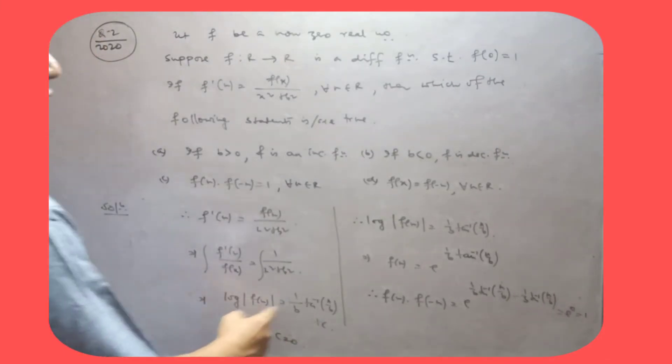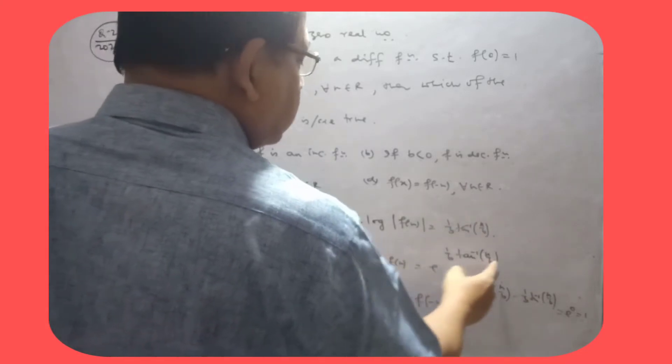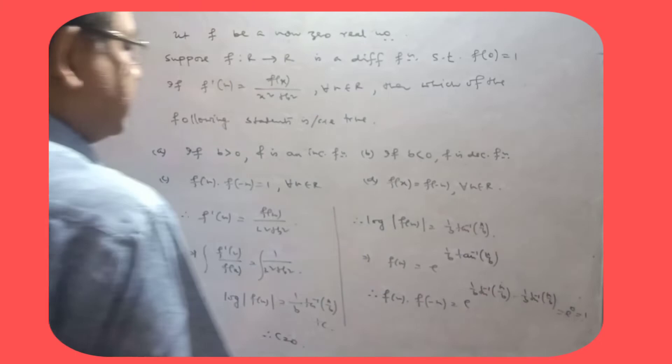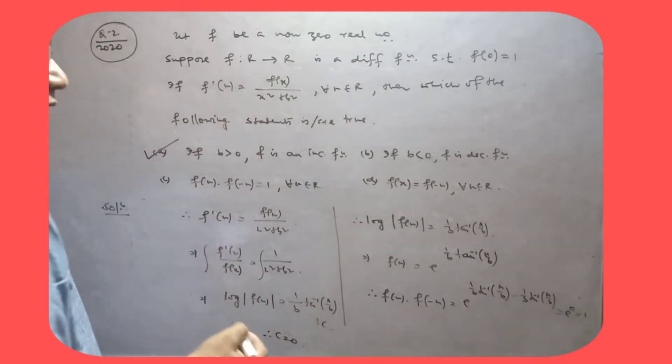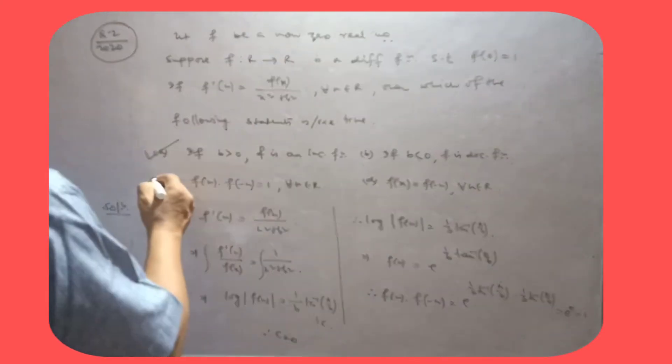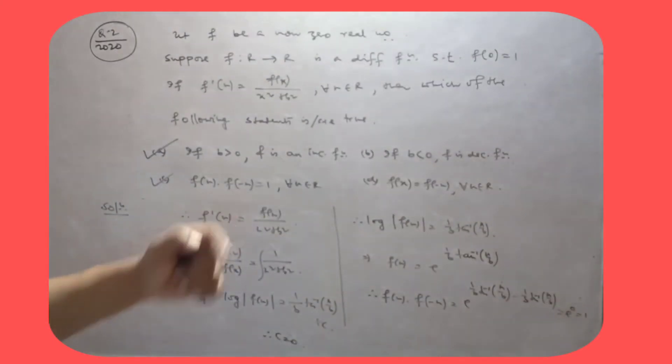Log of this equal to this, so f(x) equal to this. Abhi yeh pe kya hai dekho, so yeh jo exponential function hai, yeh to increasing function hai, yeh option to true hai. Abhi yeh dono ka product find karo hai, so that is equal to 0. So this statement is also true hai.